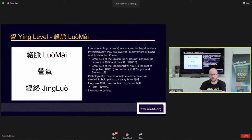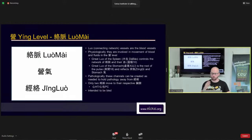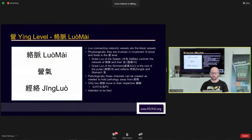In the Yin level, we also have the Luo Mai — the Luo connecting network vessels. Lu means 'connecting.' These are blood vessels involved in the movement of blood and fluids in the Yin level. Sometimes they're taught in school as only being created when pathologically needed to store something, but if you actually read the Neijing and study closely, there are aspects of the Luo that exist regardless of pathology — they're just doing their physiological thing. We don't treat them unless they're pathological. Da Bao — the great Luo of the spleen — is described in the Ling Shu as controlling the network of Luo Mai. That is its physiological function.